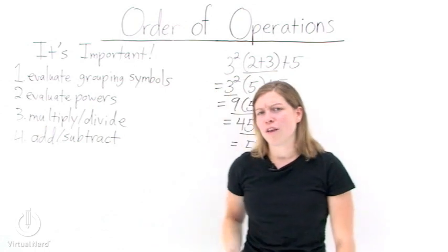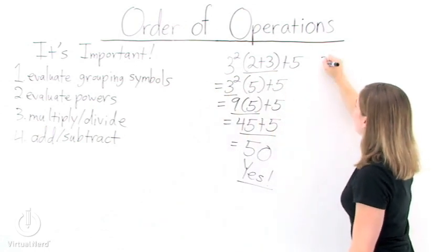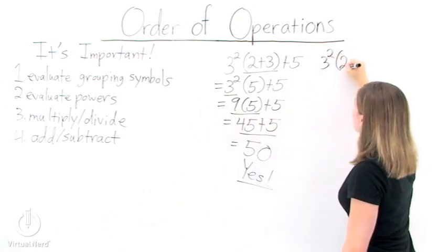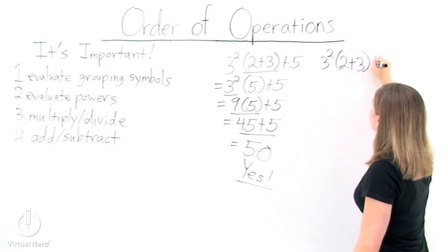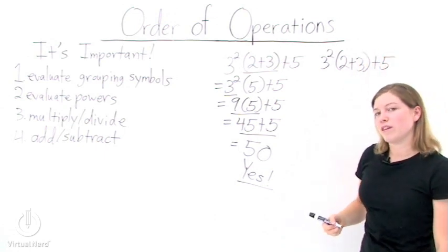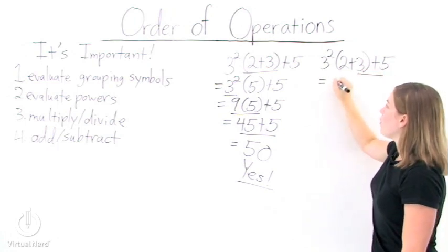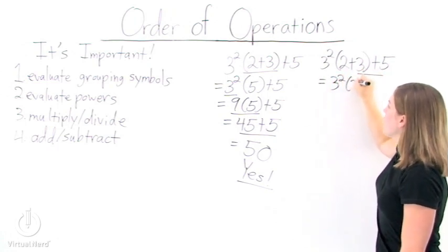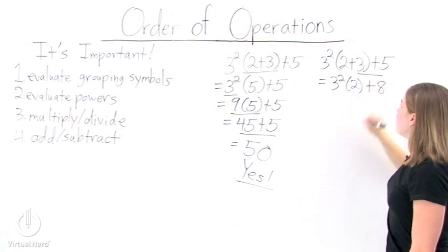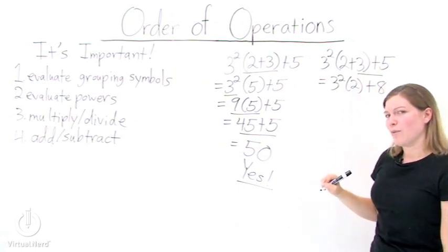Now what happens if we evaluate the same expression but we don't use the order of operations? Let's see what happens. Rather than doing grouping symbols first, let's ignore them. Let's add 3 plus 5 together. We get 3 squared times 2 plus 8. Already looks kind of different than what we had before.